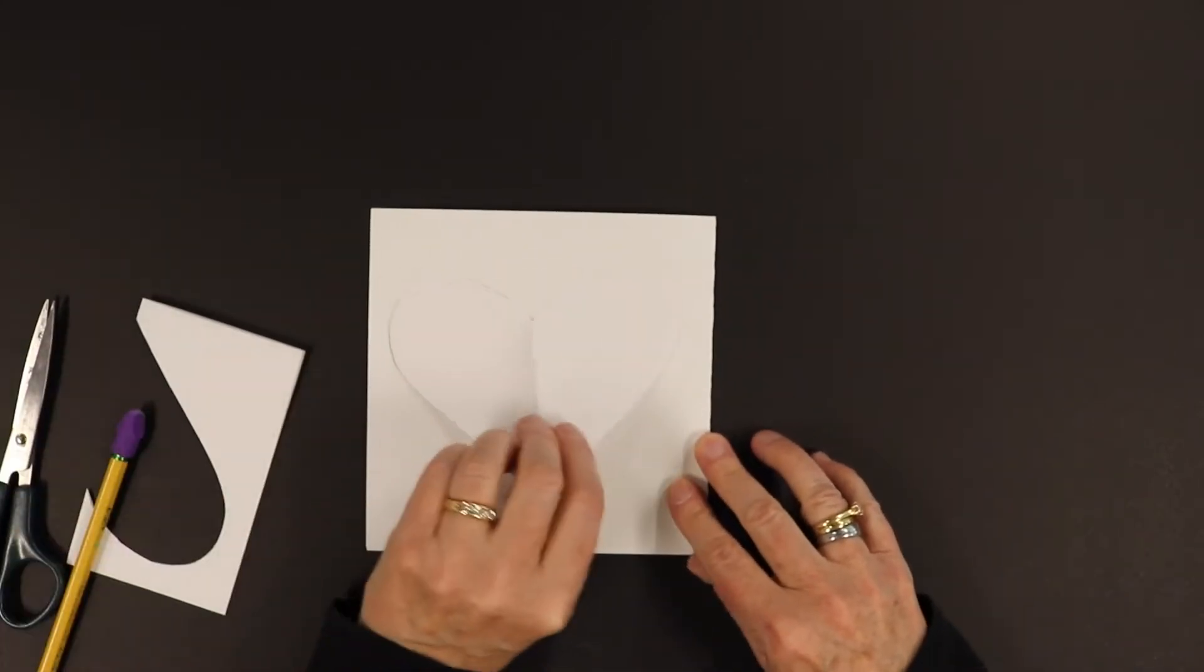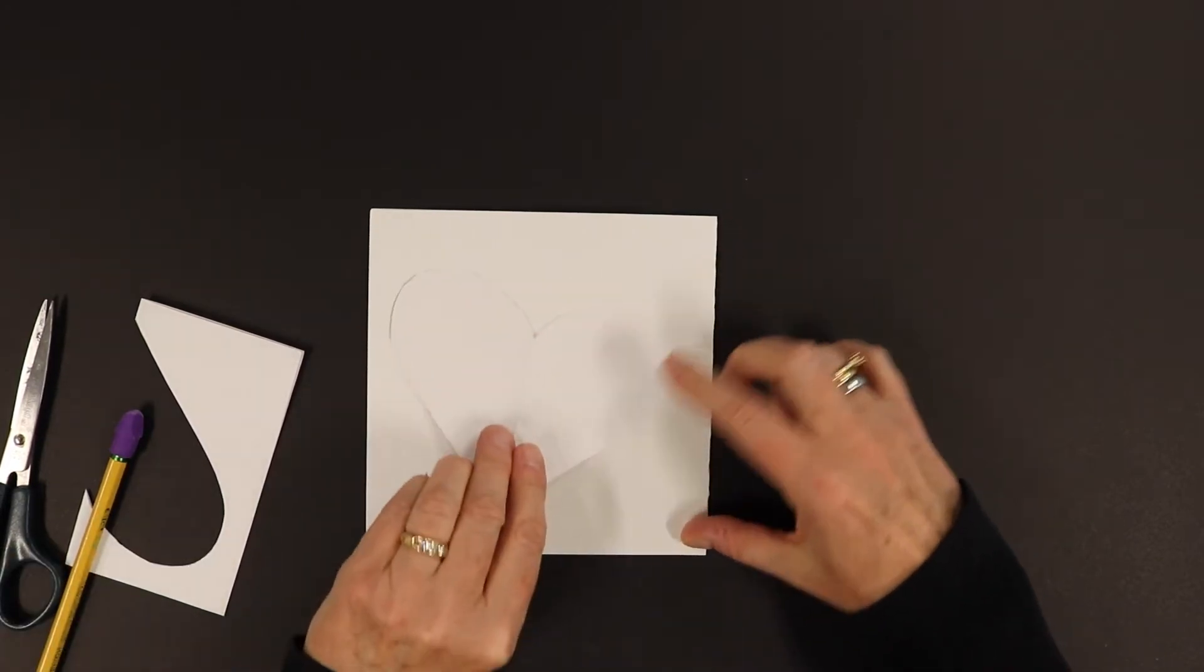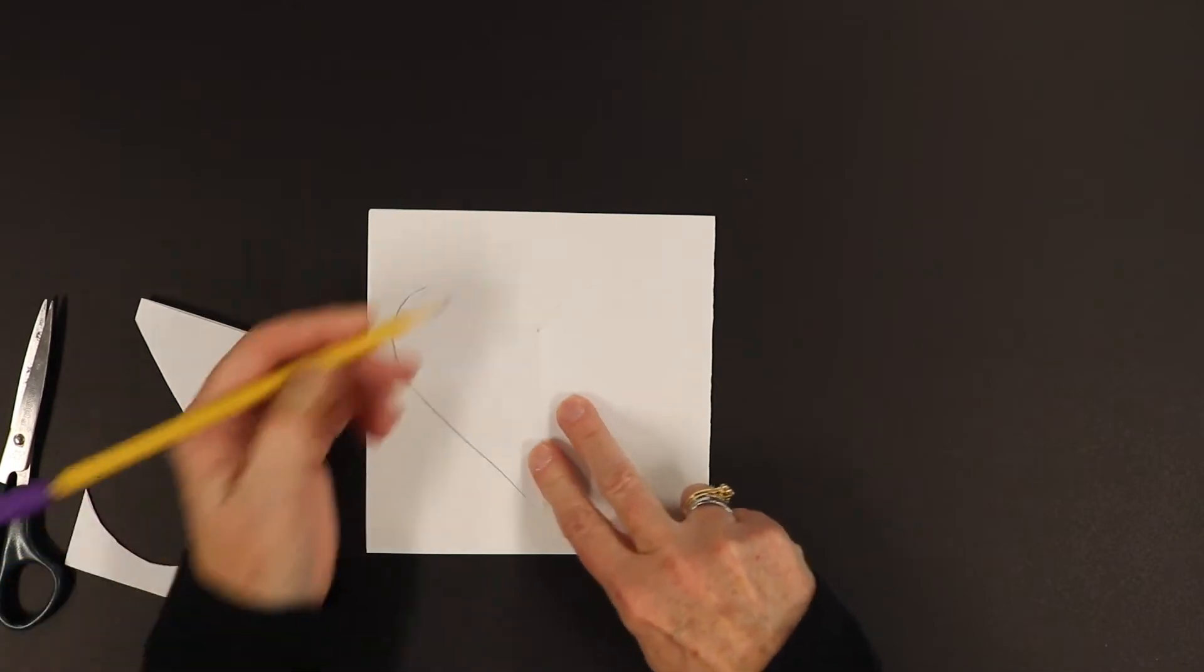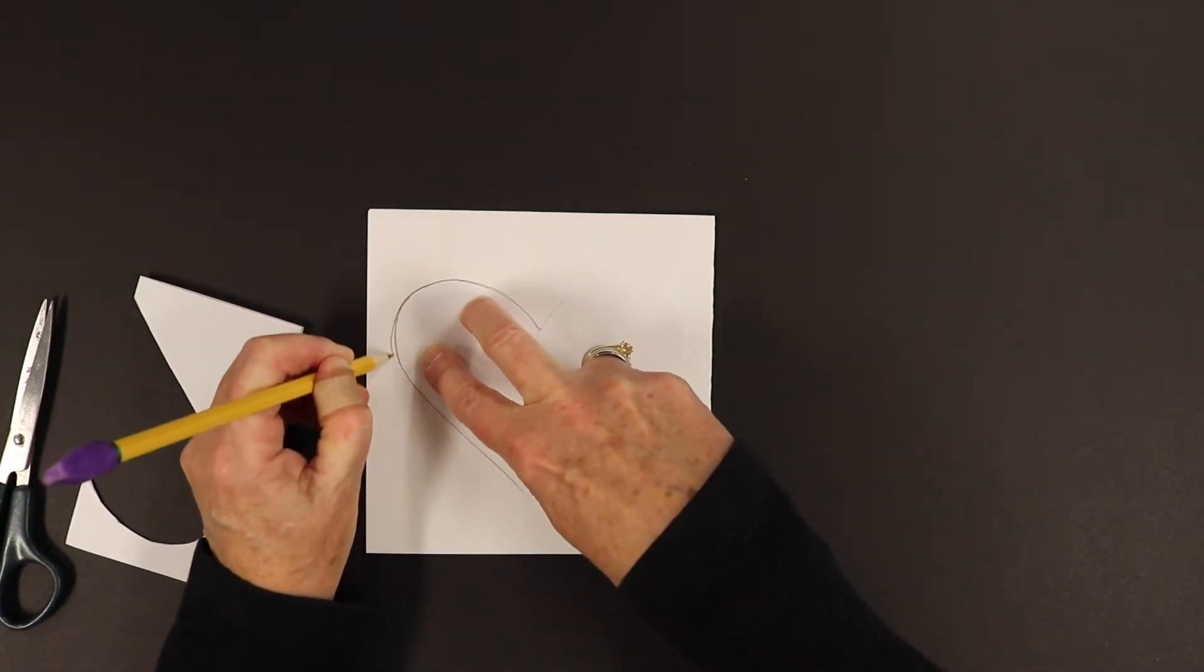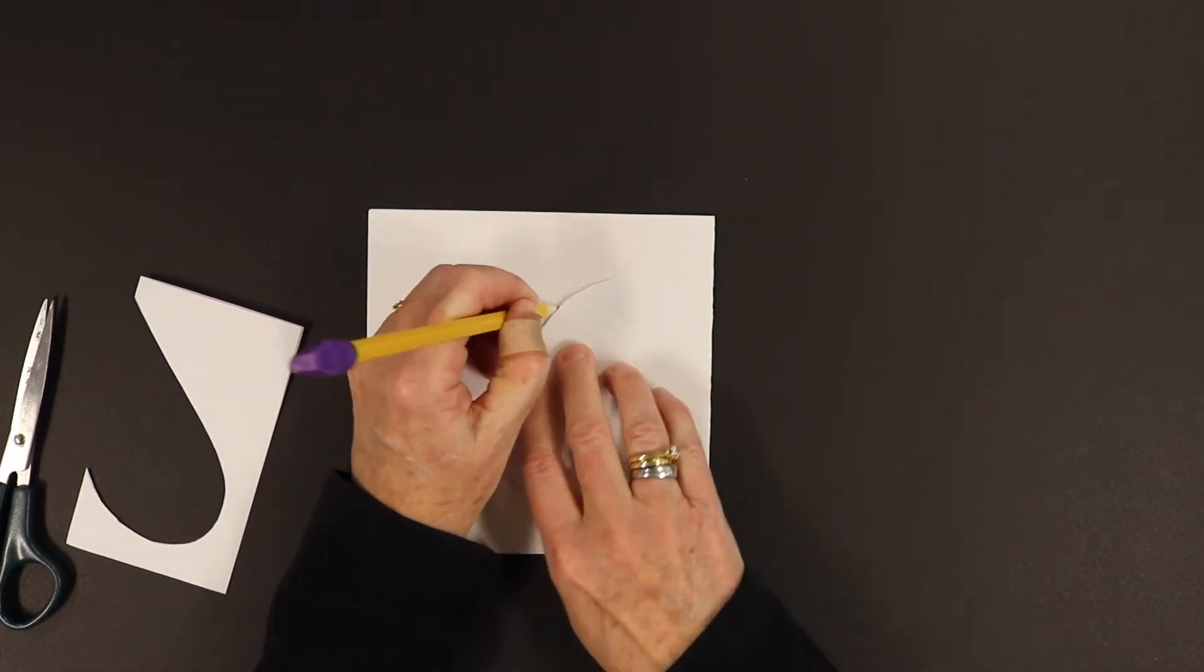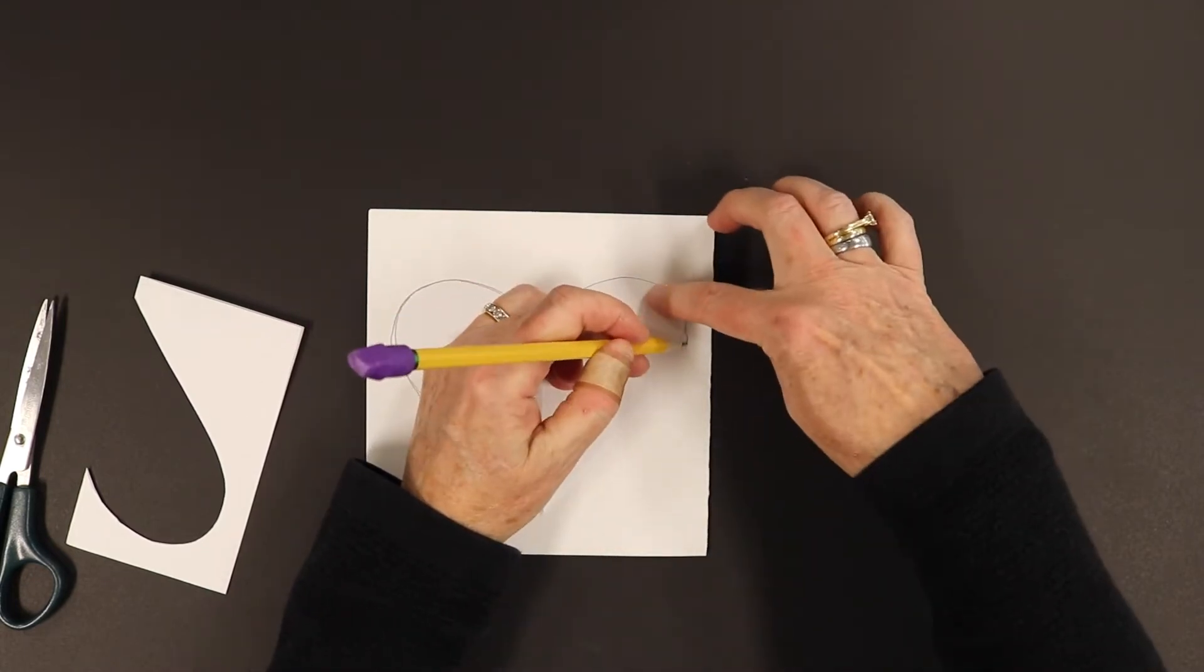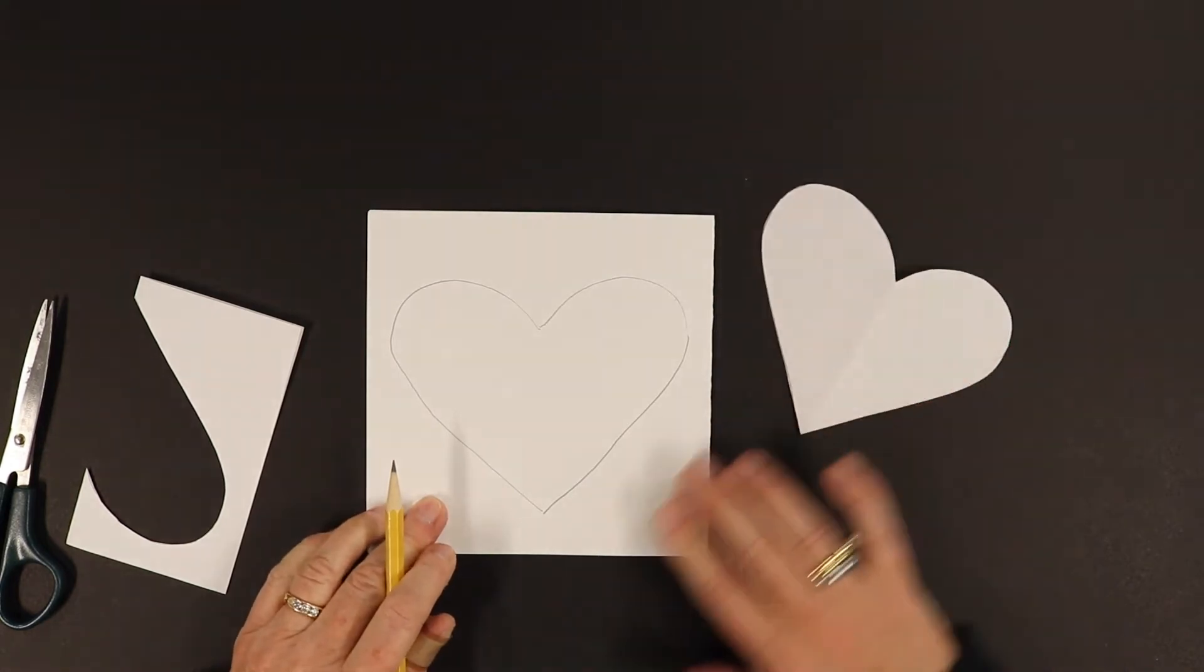Then you're going to take that tracer, if you decided not to draw your heart freehand, you can take your tracer. I know you can't really see this white on white, and you're going to use that to trace around. I'm not staying really good on my tracer. And there's your heart.